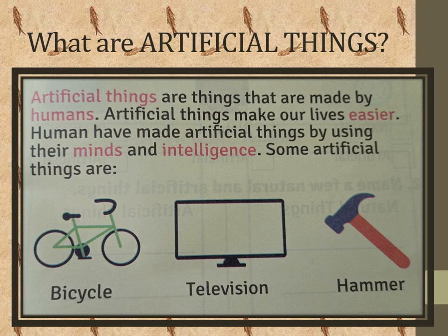Now you can easily understand and differentiate between the things which are man-made, called artificial things, and the things which are made by Almighty Allah, called natural things.